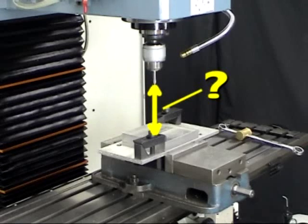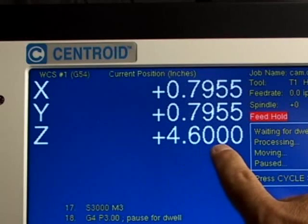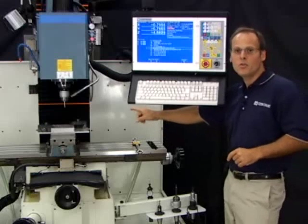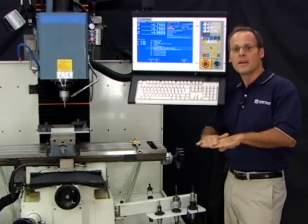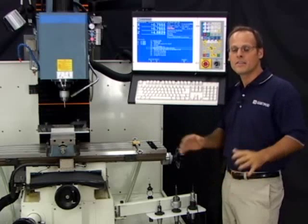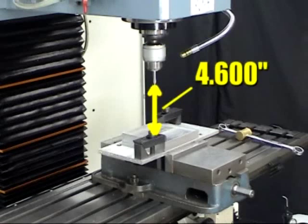So for instance, right now the Z axis DRO is reading 4.6 inches. That means the top of that tool should be 4.6 inches above the top of our part, because that's what we call Z0. This is the reality check. Now, looking at that, it looks pretty good. It looks about 4.6 inches above the part.